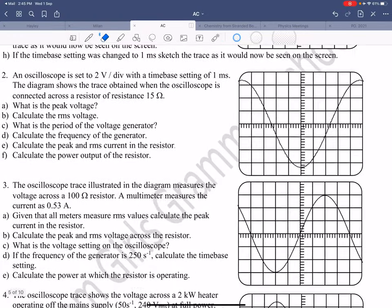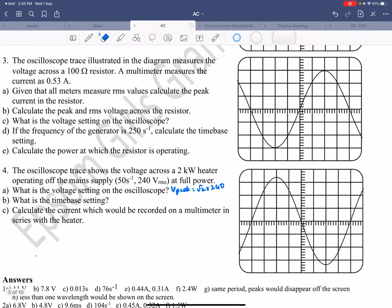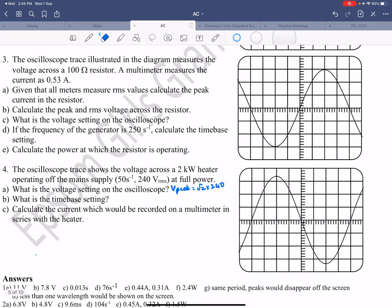Hi everybody. So I had a question about question 4 of this oscilloscope. So this one is the oscilloscope trace shows the voltage across the 2 kilowatt heater.